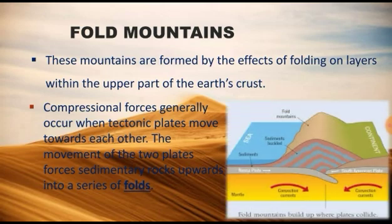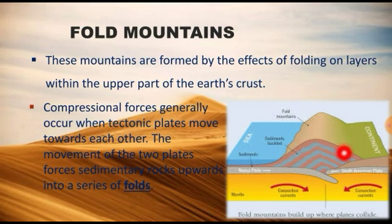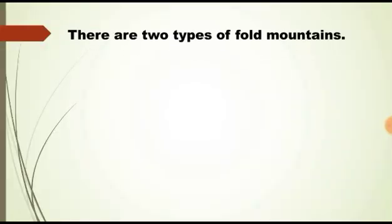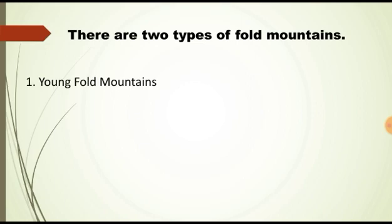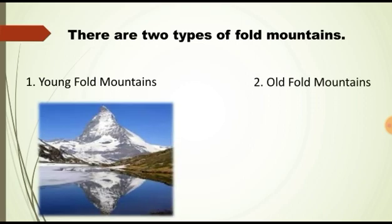Here is the diagram showing two plates converging. There is a compressional force occurring here, and due to that force, folding of the uppermost part of the Earth's surface takes place — that's how fold mountains are formed. There are mainly two types of fold mountains: young fold mountains and old fold mountains.